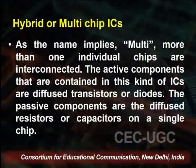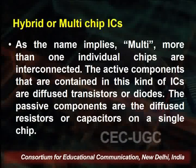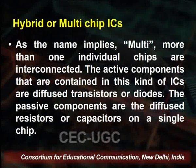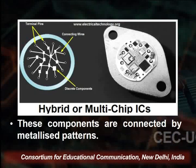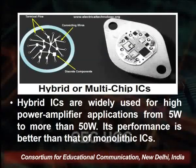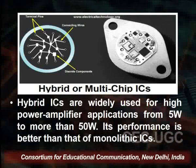Hybrid or multichip ICs have more than one individual chip interconnected. The active components in this kind of IC include diffused transistors or diodes, while the passive components are diffused resistors or capacitors on a single chip. Multiple chips are interconnected — a mesh-type arrangement where squares represent chips connected through wires via metallized patterns. Hybrid ICs are widely used for high-power amplifier applications from 5 watts to more than 50 watts, and their performance is better than that of monolithic ICs.